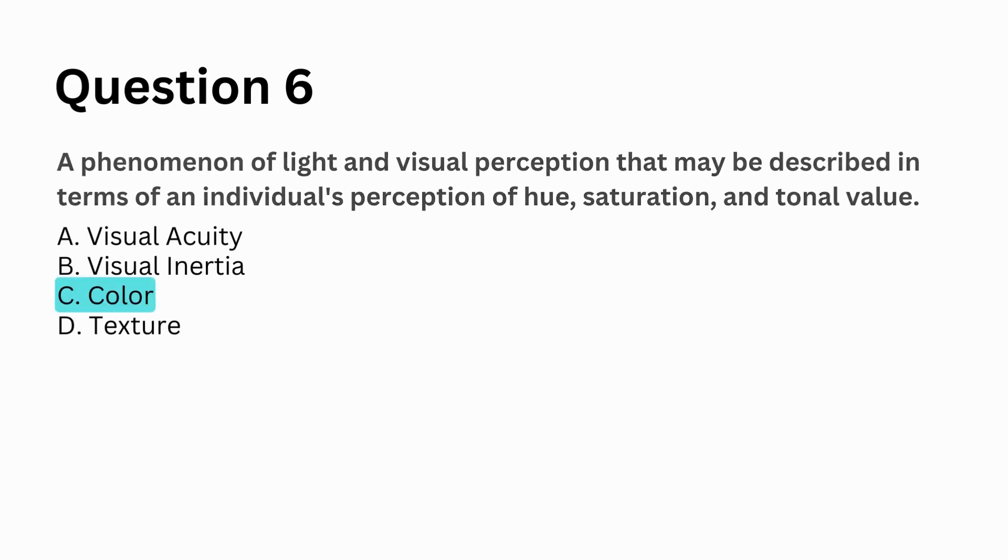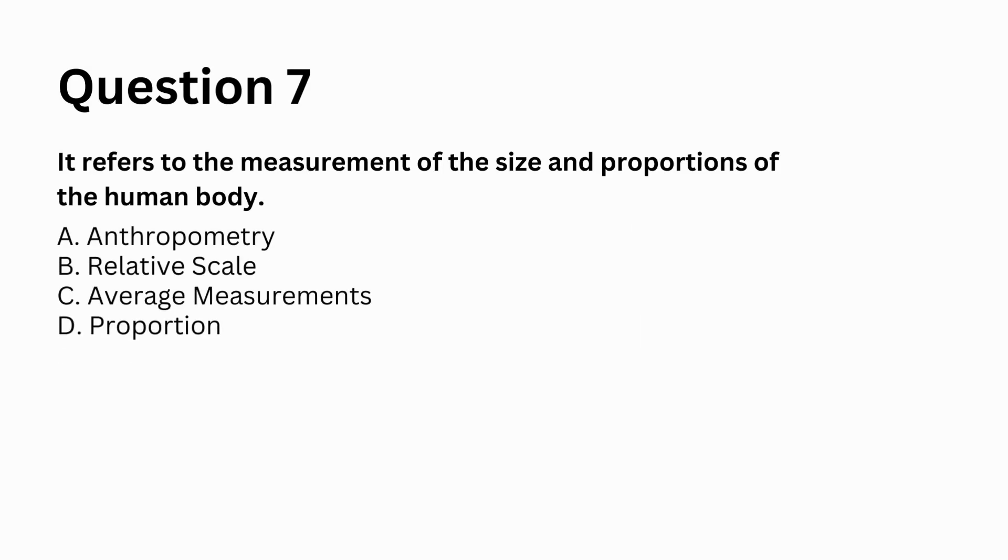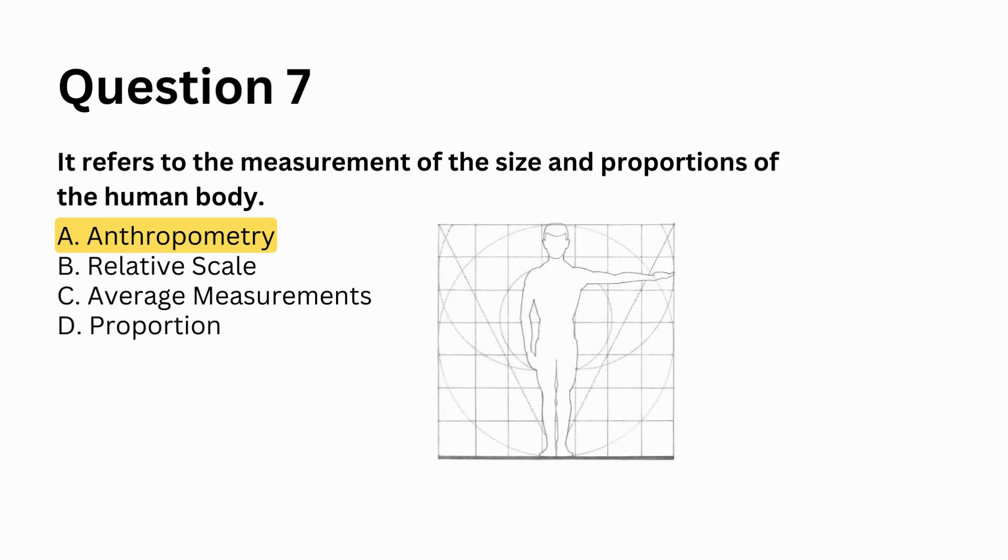C. color. It refers to the measurement of the size and proportions of the human body. A. anthropometry, B. relative scale, C. average measurements, D. proportion. Answer: A. anthropometry.